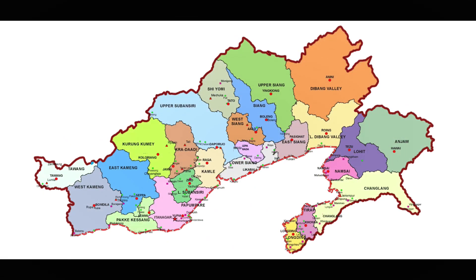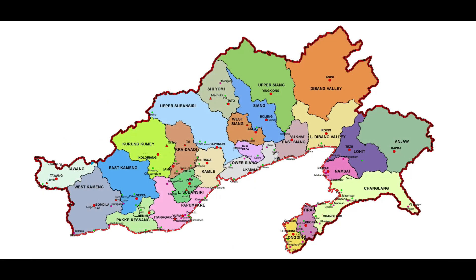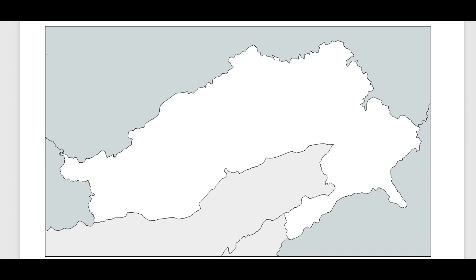The state comprises 25 districts. Geographically, it can be segmented into different river valleys and continuous mountain ranges. The prominent amongst those includes the Dafla Hills, the Miri Hills, the Abor Hills, the Mishmi Hills, and the Patkai Range.